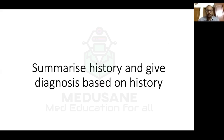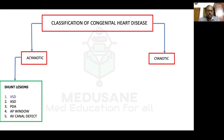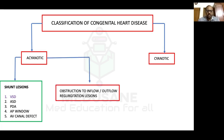Coming to the classification of congenital heart disease, they are broadly classified into acyanotic and cyanotic. Cyanotic will be covered separately with tetralogy of Fallot. Acyanotic heart disease is of two types: shunt lesions with left-to-right shunt — prototype being VSD, then ASD, patent ductus arteriosus, aortopulmonary window, and AV canal defect — and obstruction or regurgitation lesions like congenital mitral stenosis, bicuspid aortic valve stenosis, or congenital mitral or aortic regurgitation.